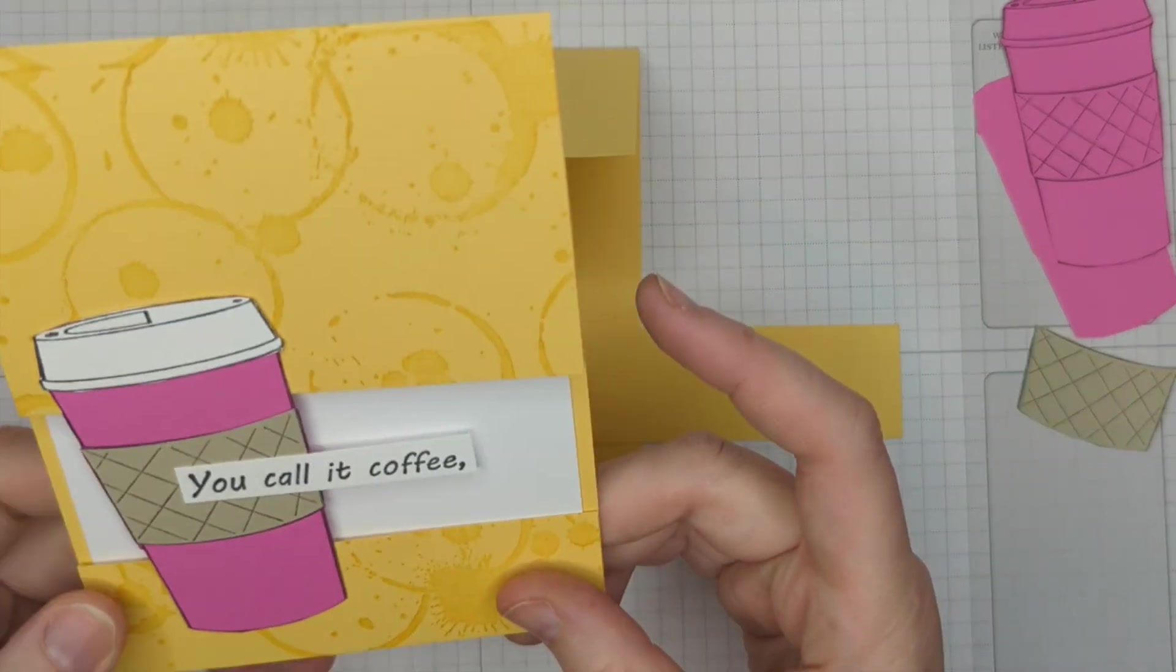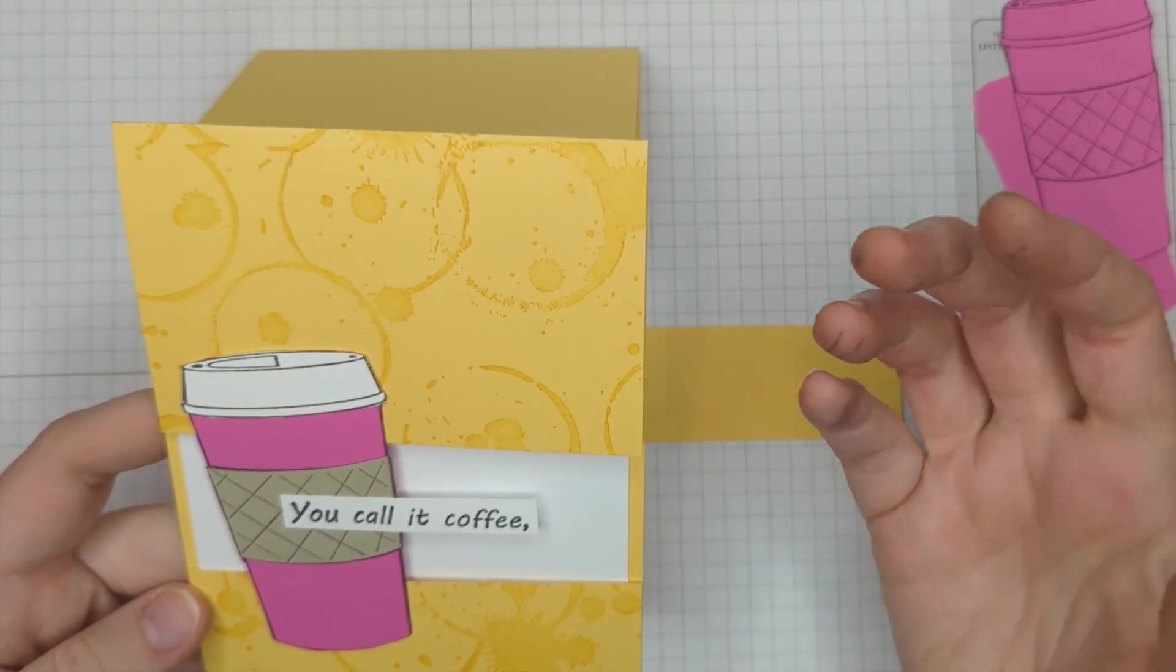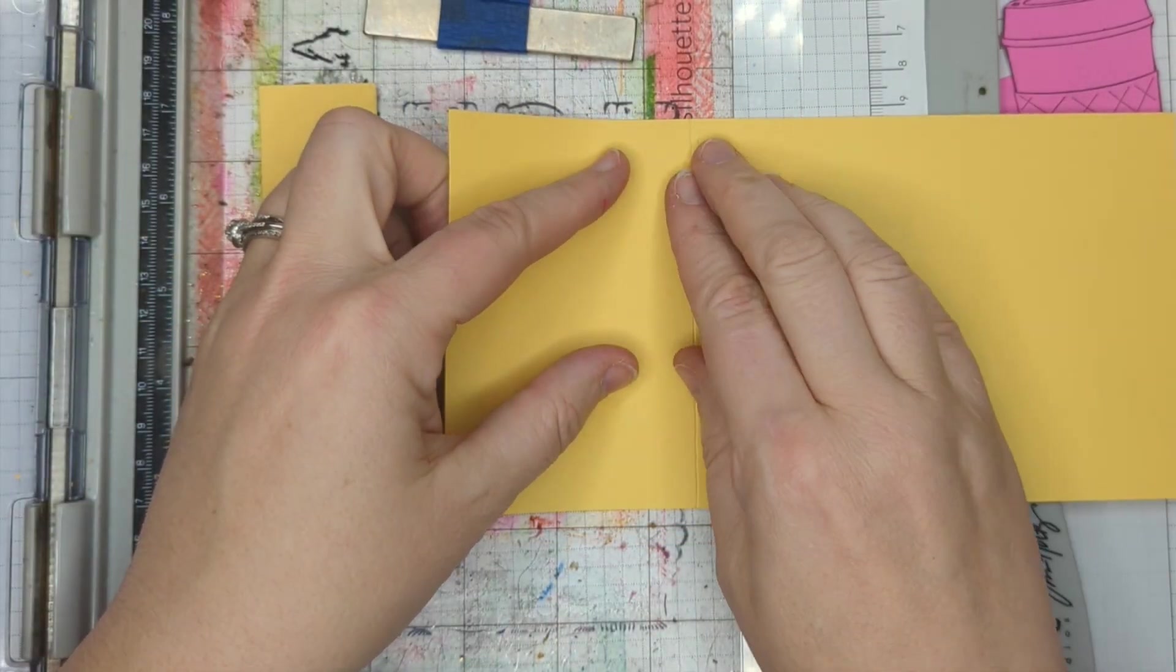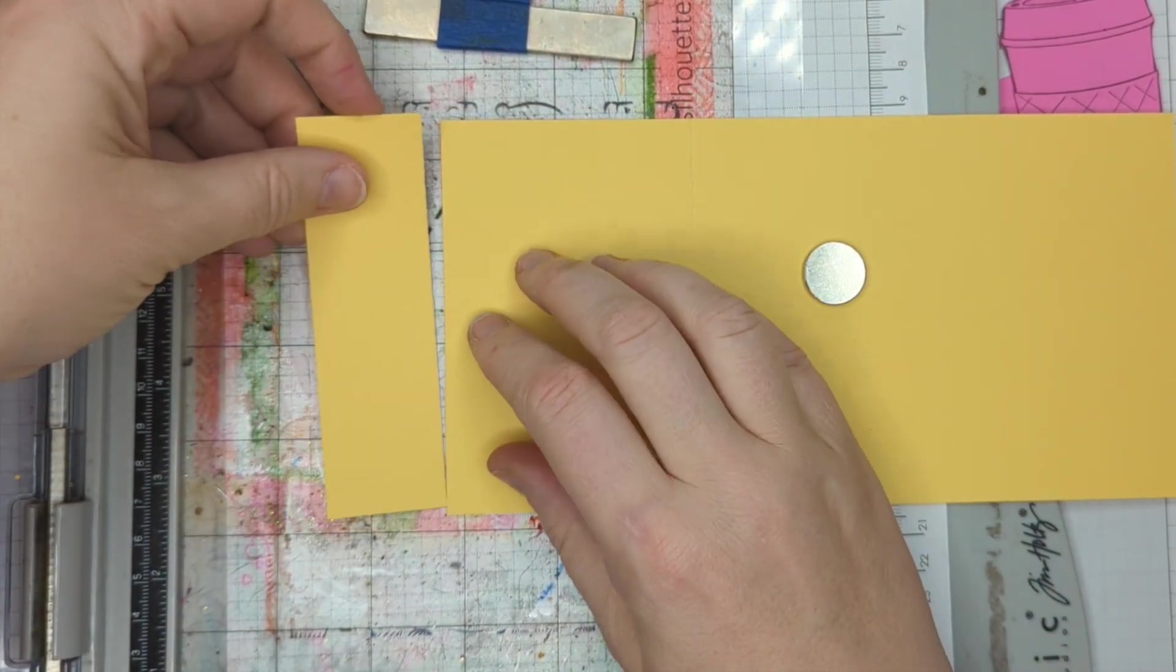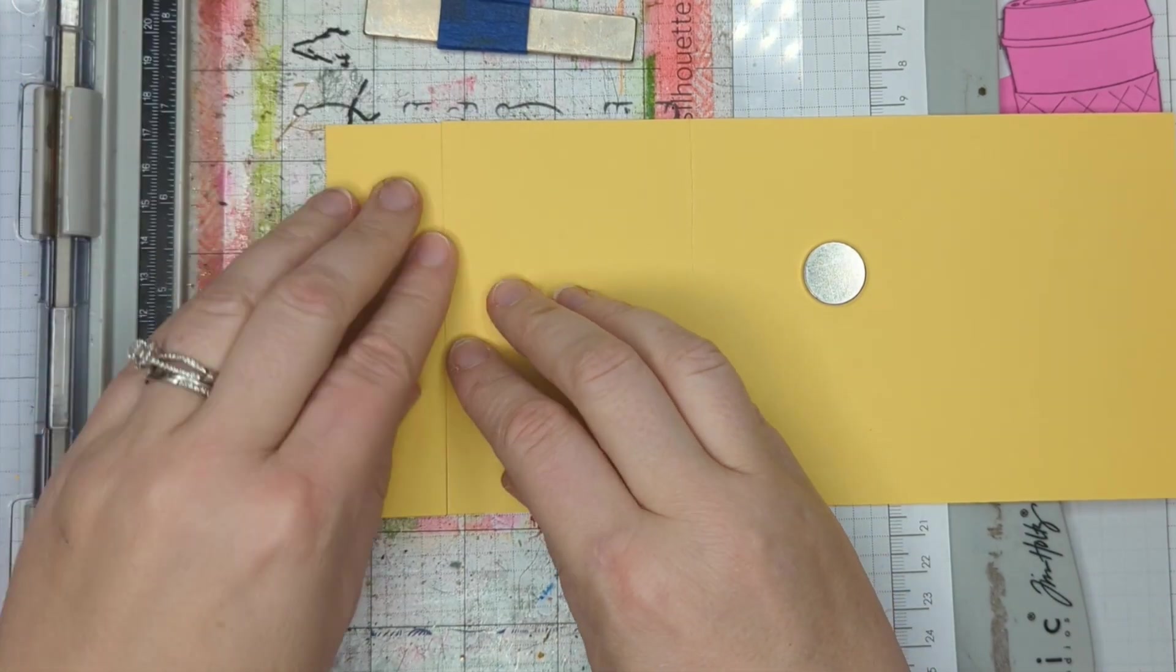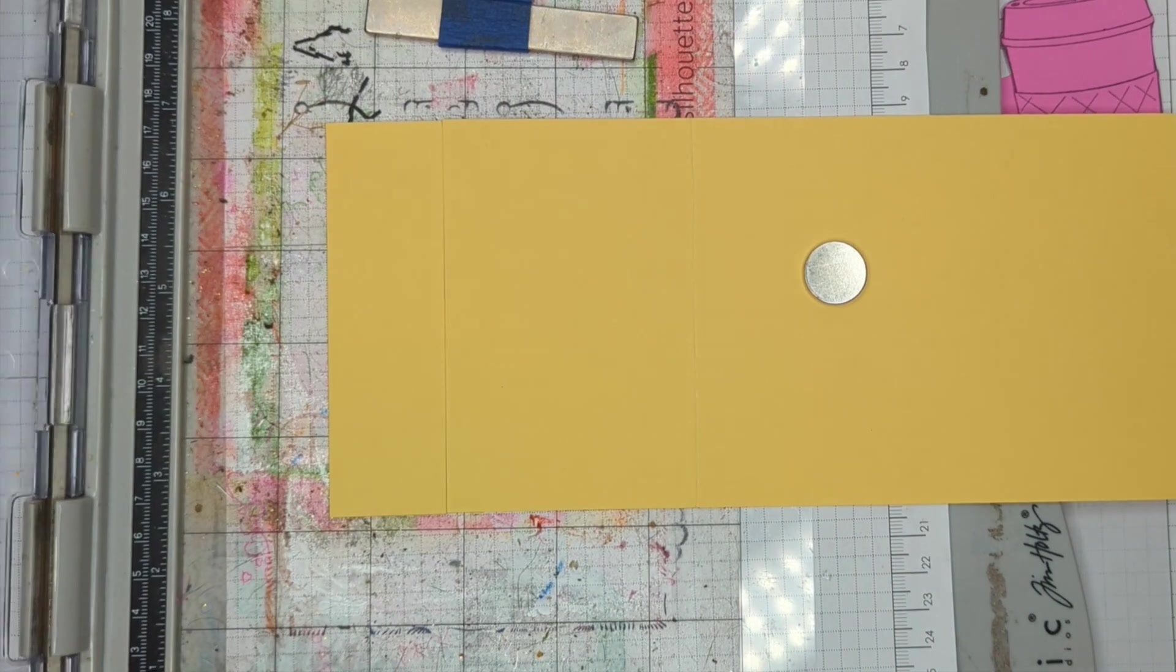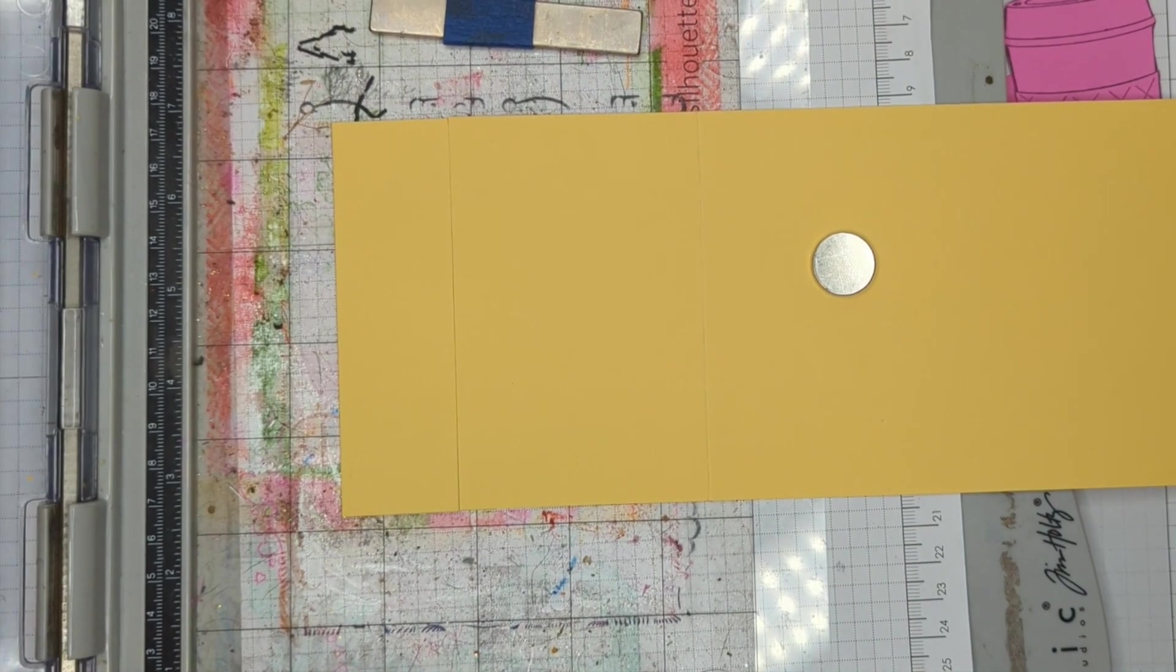Now on my card, I decided I wanted to stamp a background to kind of break that up. So let's do that, and I'm going to go ahead and place down. The only place I want the background is on the front of the card. So I'm going to use this line, the score line, as a place to measure or to know where to put my stamp.